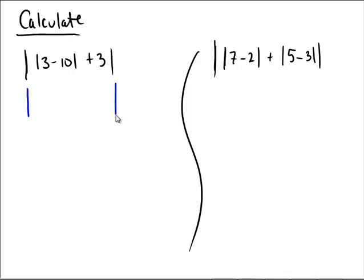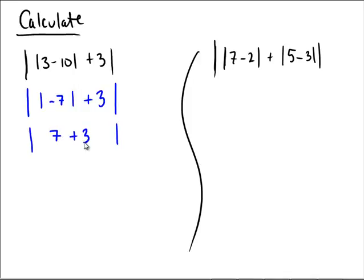In this first problem on the left, inside of the outer absolute value we see another set of absolute values, and then adding a number three. Inside the inner absolute value, three minus ten is negative seven. Now the absolute value of negative seven — negative seven is seven units away from the origin — so the absolute value of negative seven is seven.